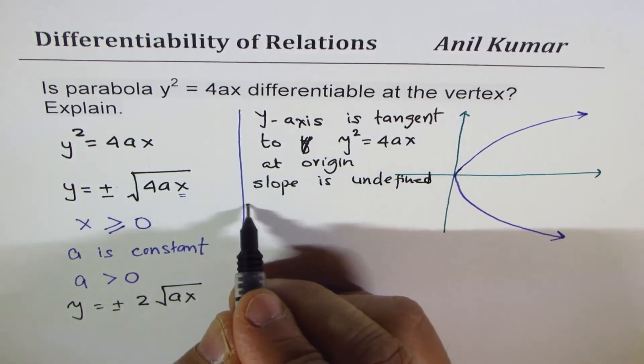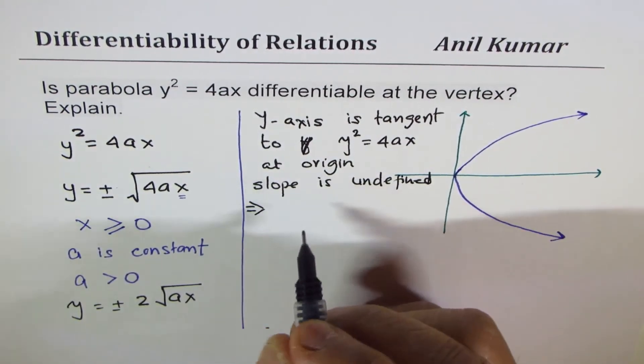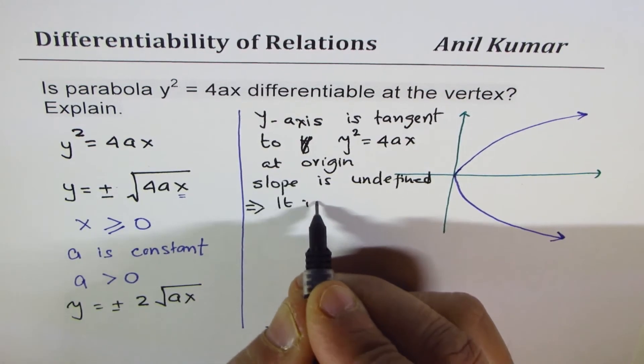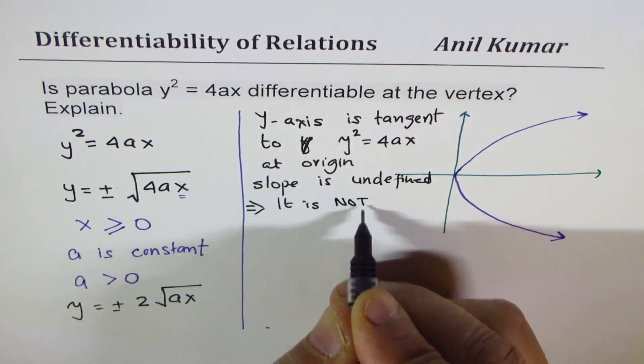Since the slope is undefined, we say that it is not differentiable.